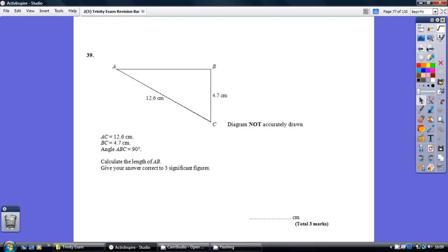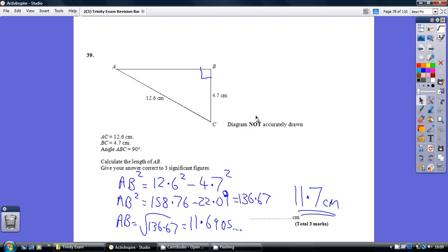Okay, 39, have a go. Well, this is another Pythagoras question, because again, there are no angles given apart from the right angle. But on this occasion, we're being asked to find one of the shorter two sides. So it's a taking away Pythagoras.